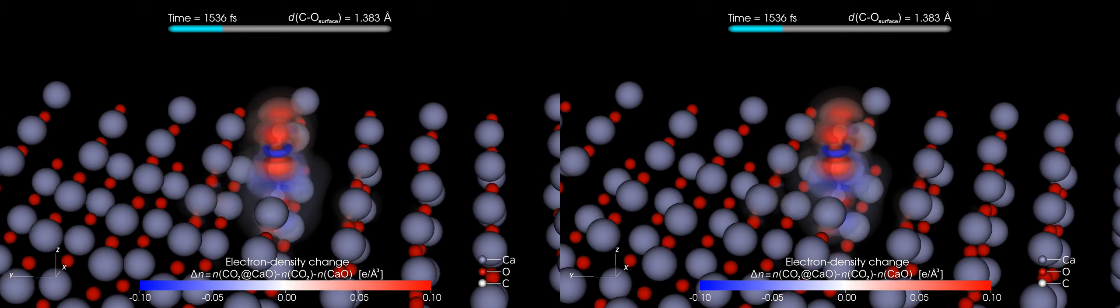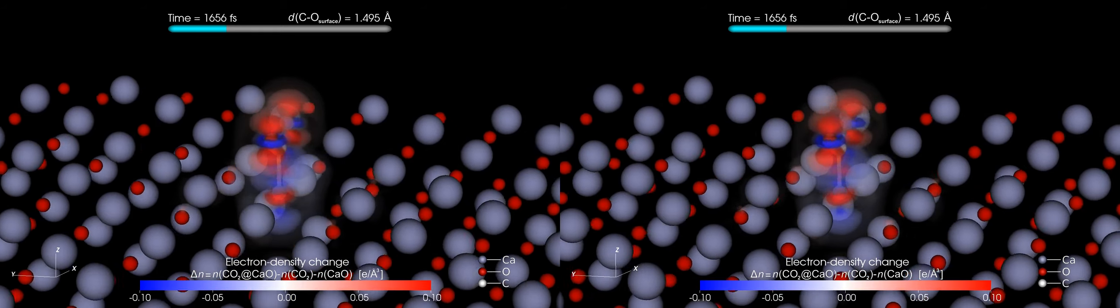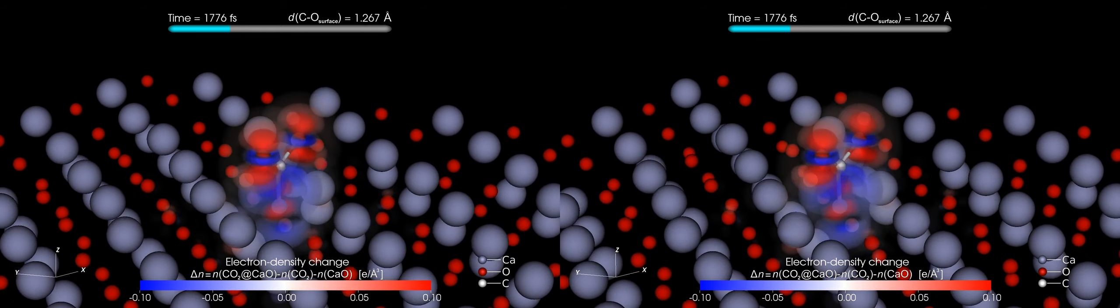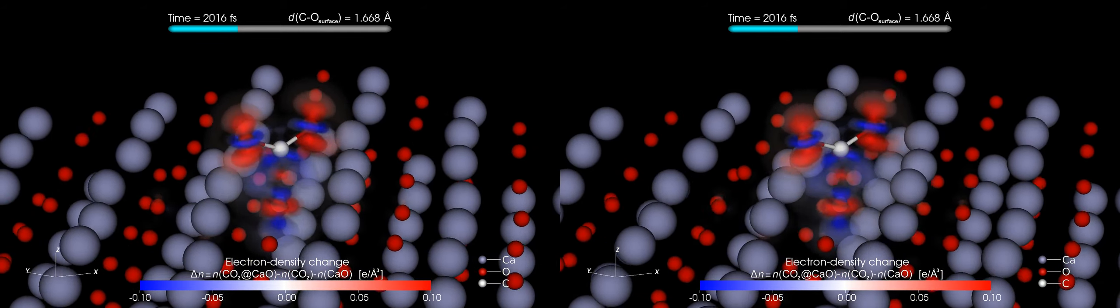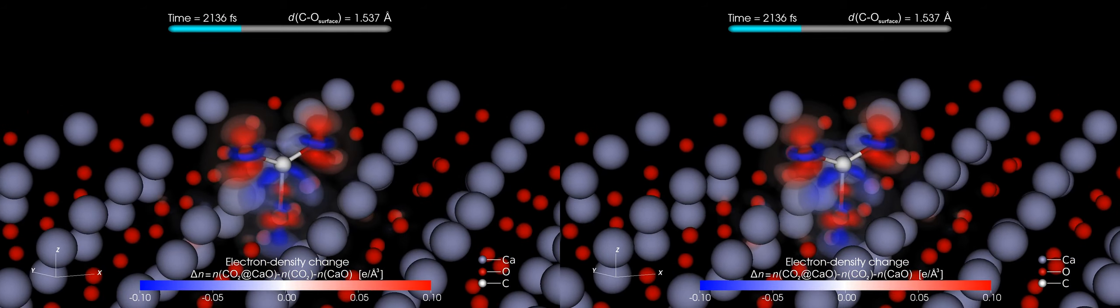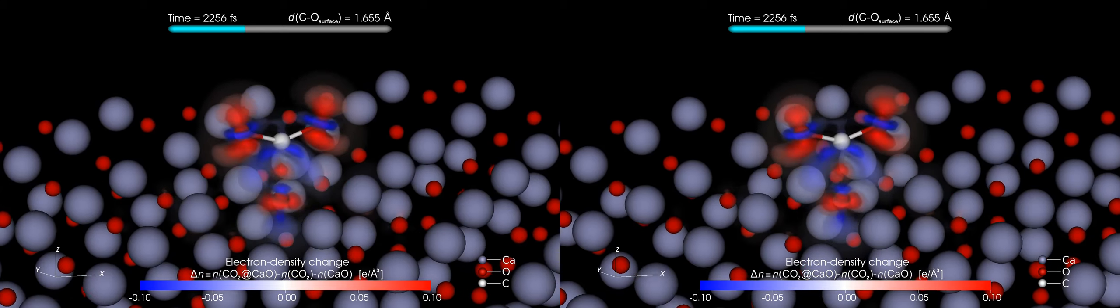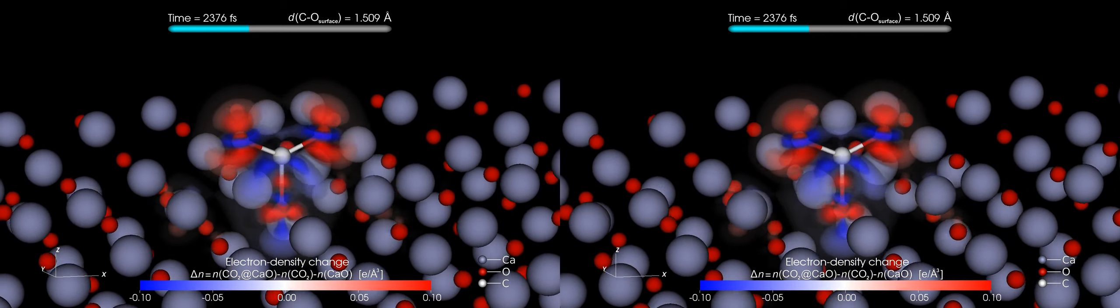The new shape of the electronic charge density indicates that the formerly very stable CO2 molecule is now ready to undergo the desired chemical reaction. The process is shown in slow motion. In reality, it happens 20 billion times faster.